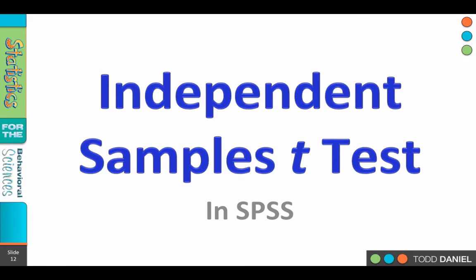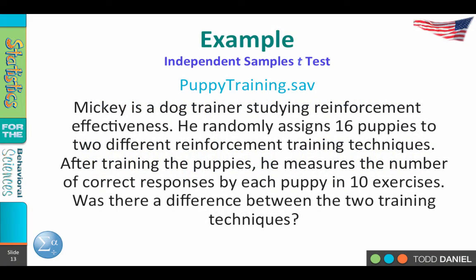So let's do an independent samples t-test using SPSS. If you haven't already, open SPSS and then open PuppyTraining.sav.